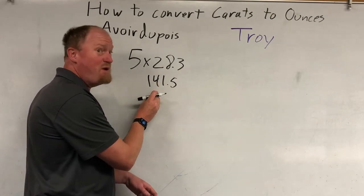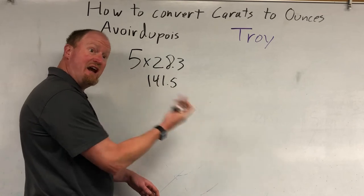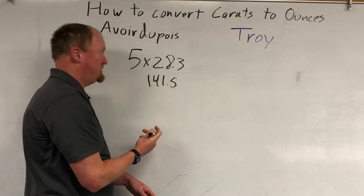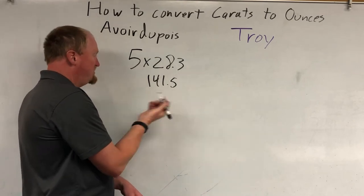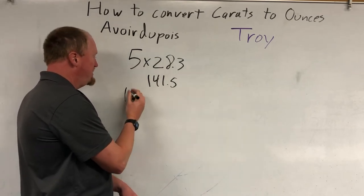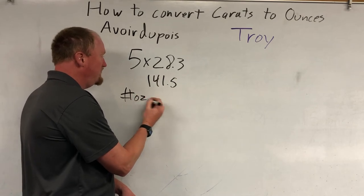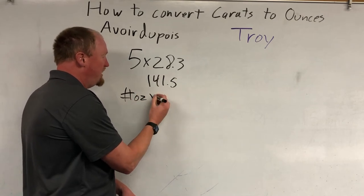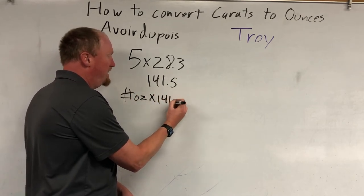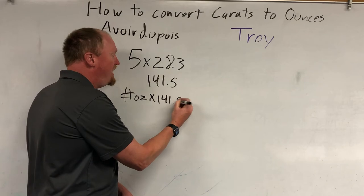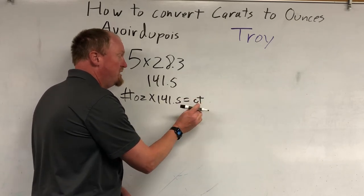Carats are really small — there's over a hundred carats in a single ounce. So to do it, you take your number of ounces, you multiply by 141.5, and that equals the number of carats.